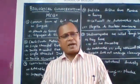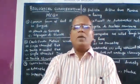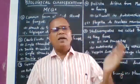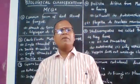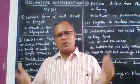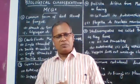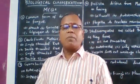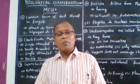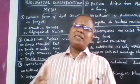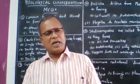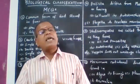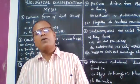This five kingdom system of classification was given by R.H. Whittaker. Technically, unicellular cells were better classified - heterotrophic, prokaryotic - this is the five kingdom system of classification.